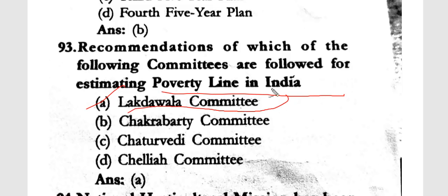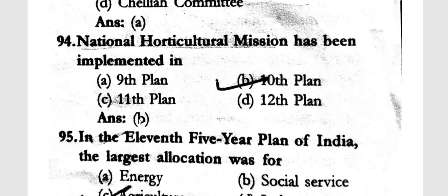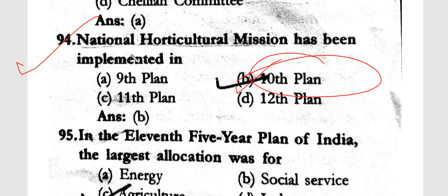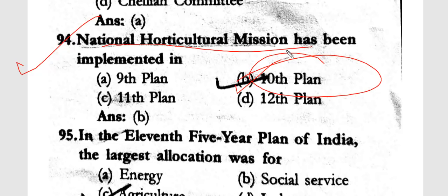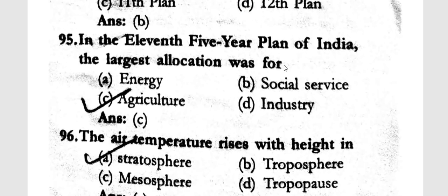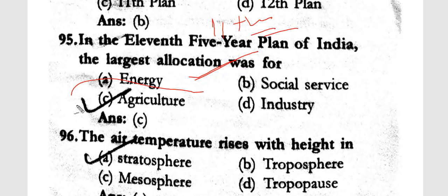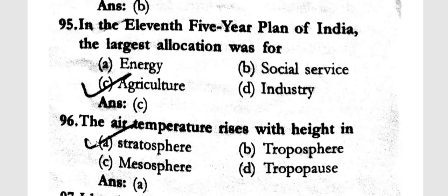The National Horticultural Mission has been implemented in the 10th Plan. In the 11th Five Year Plan of India, the largest allocation was for agriculture.